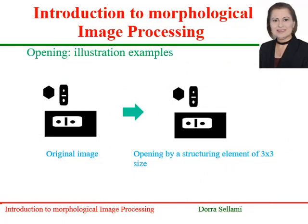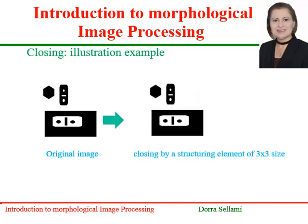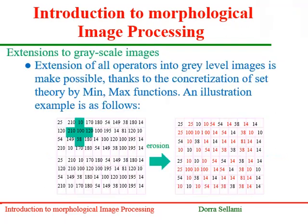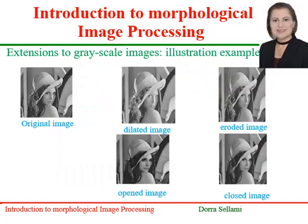Here is an illustration of the opening and closing operators on a synthetic image for a rectangular structuring element of size 3x3. No visible difference can be seen here because the original image is clean. Given the importance of the processing blocks applied to binary images based on mathematical morphology, we extend all operators into gray level images, thanks to the generalization of set theory by min and max functions. An illustration example follows, and we show the deletion and erosion of Lena, then an opening and closing of the same image Lena.